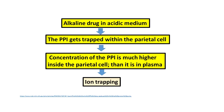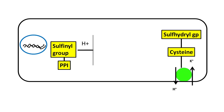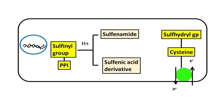The proton pump inhibitor's sulfonyl group, in the presence of the acidic medium of the parietal cell, gets converted to the sulfenamide moiety and sulfenic acid derivatives. These bind to the sulfhydryl group of the cysteine residues of the proton pump and inhibit it permanently. The binding of the sulfenamide and sulfenic acid derivatives to the sulfhydryl group is a covalent bond — a permanent bond that cannot be reversed.